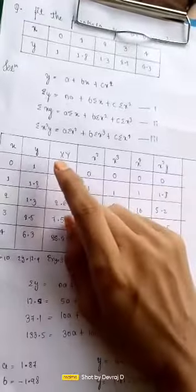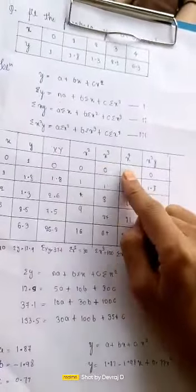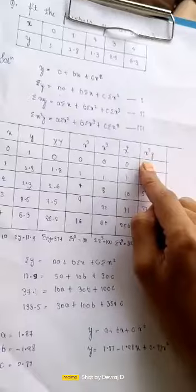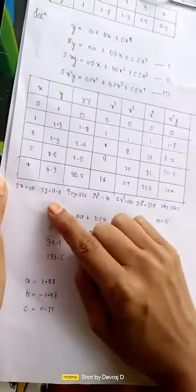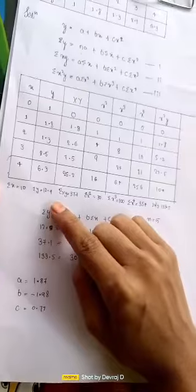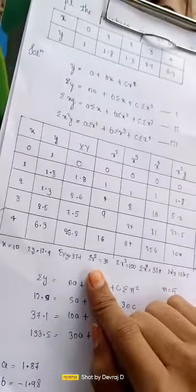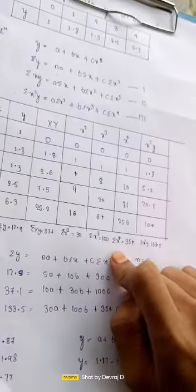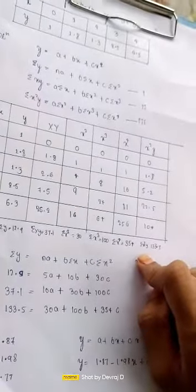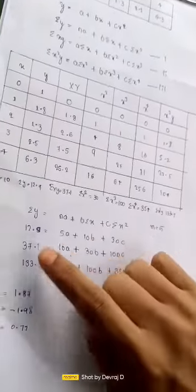By the calculation we get the values of xy, x square, x cube, x to the power of 4, and x square y. Then: summation of x equal to 10, summation of y equal to 12.9, summation of x square equal to 30, summation of x cube equal to 100, summation of x to the power of 4 equal to 354, and summation of x square y equal to 133.5.